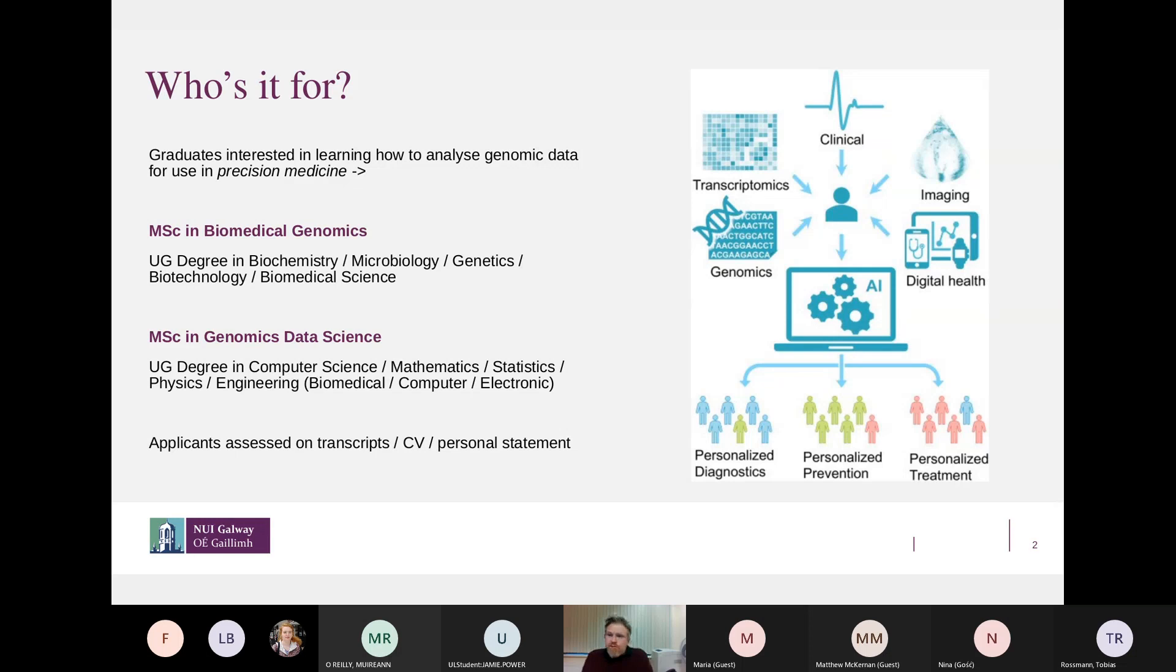So the two types of graduates that we target for the different programs are a little bit different. If you're coming from a life science background with a degree in biochemistry, microbiology, biotech or biomedical science, you would apply typically for the entry to the MSc in Biomedical Genomics. And if you're coming from a more quantitative background, with background and skills in maths, stats, physics, computer science, or biomedical, computational, or electrical and electronic engineering, you would typically apply for the MSc in Genomics Data Science.